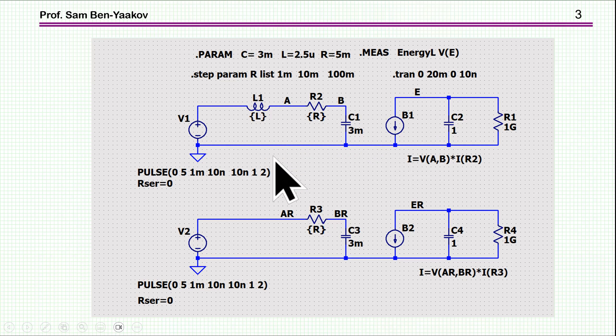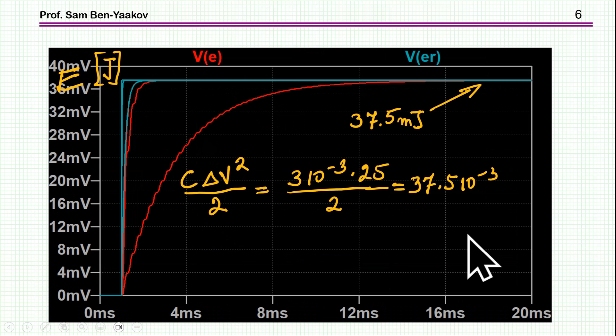So, we have actually two parts here, so I can run them in parallel. One is with an inductor, and one is without an inductor, just a resistor. And then I'm stepping the resistor from 1 milliohm to 100 milliohms, that is the total resistance in this circuit. Now, what about losses?